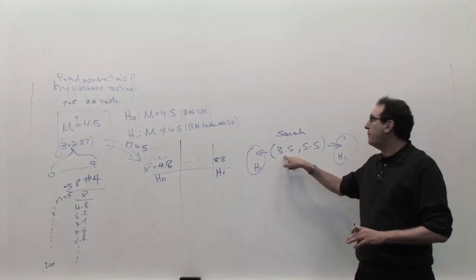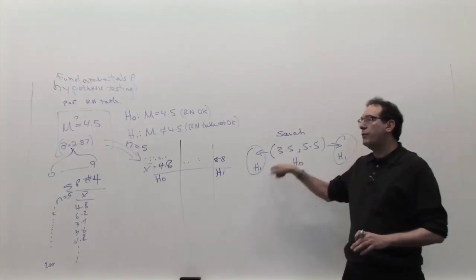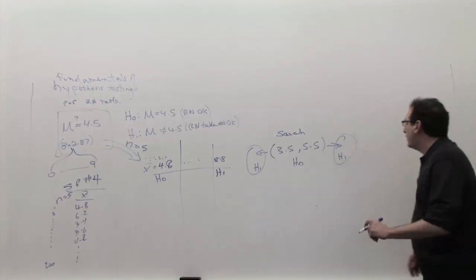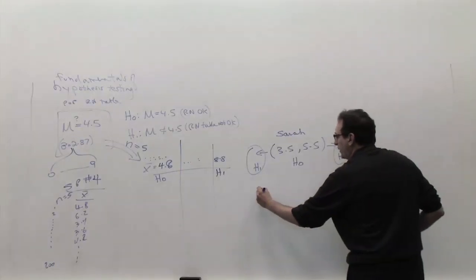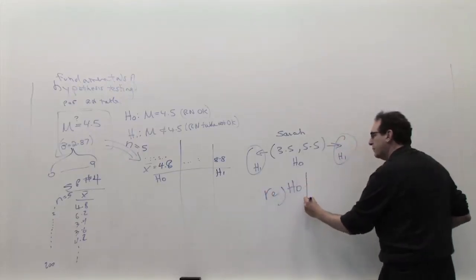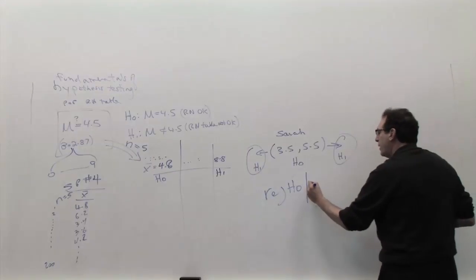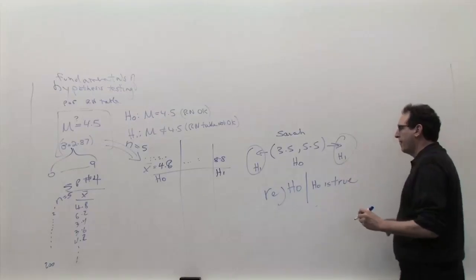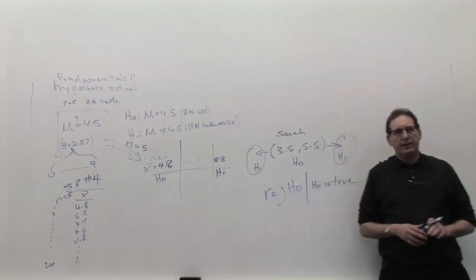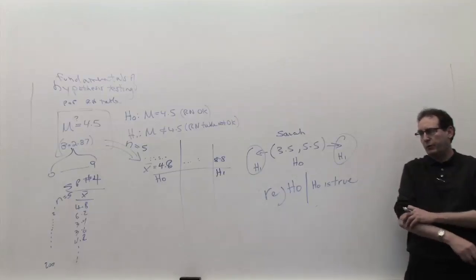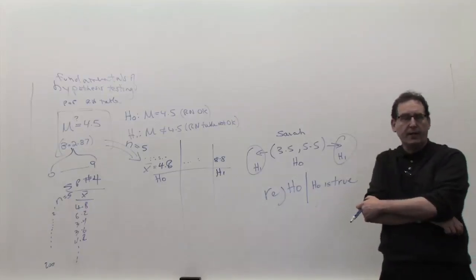And at the same time, if you can count Sarah, how many are lower than 3.5, 3.4, 3.2, 3.0. Go down, count up how many are in that category. So that's going to be how often you would reject H0, and I'll explain this slowly because it's the hardest part of the whole thing, when in fact the H0 is true. This is the main concept of the whole chapter.